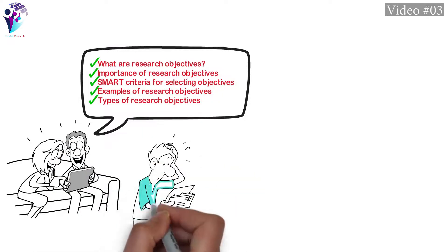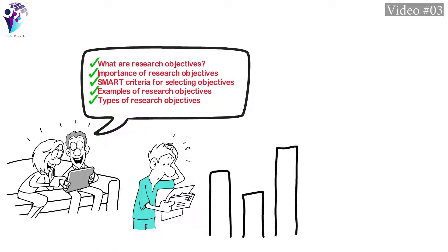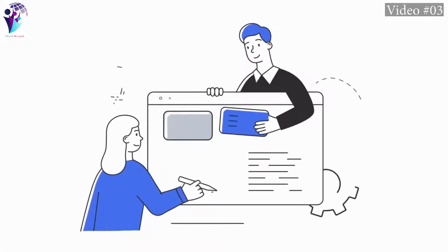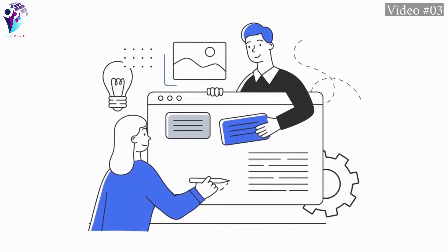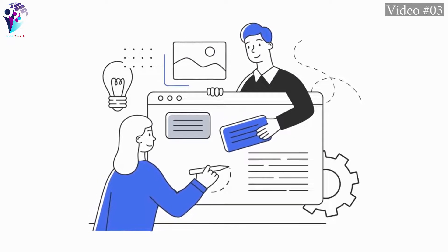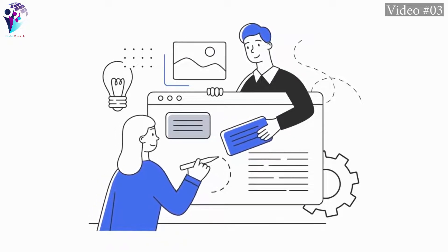An objective is an intent of what the researcher wants to do, stated in clear measurable terms. It is an organized investigation of a problem in which there is an attempt to gain a solution to a problem.